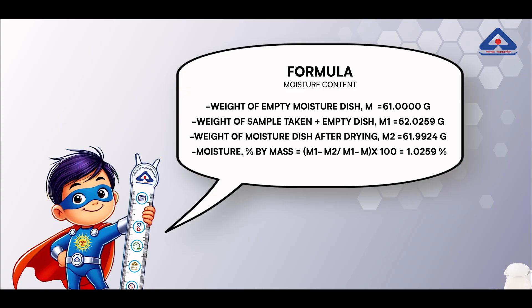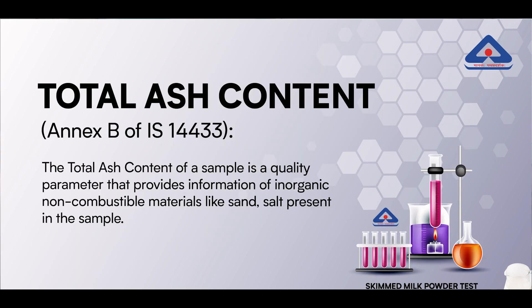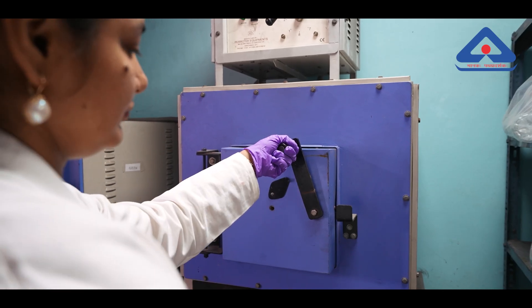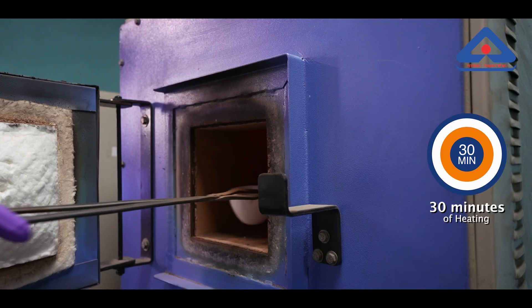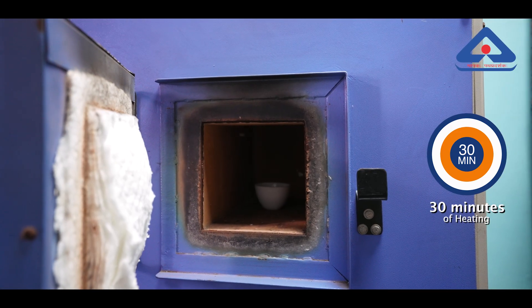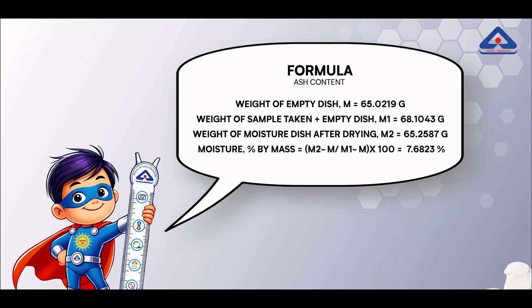Number two: Total ash, Annex B of IS 1443. The total ash test measures mineral by burning the powder and weighing the leftover ash in a muffle furnace at 550 degrees Celsius.